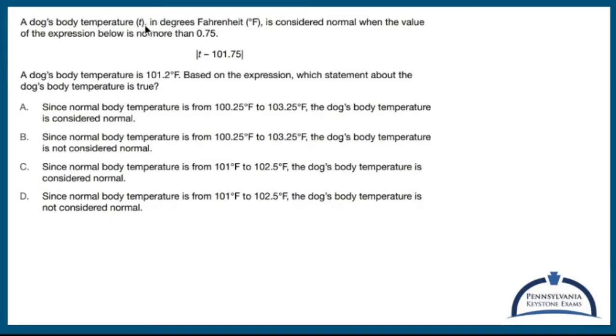A dog's body temperature T in degrees Fahrenheit is considered normal when the value of the expression below is no more than 0.75. So this has got to be no more than 0.75. So let's set that up. The absolute value T minus 101.75 is no more than, which means it's less than and also equal to 0.75.